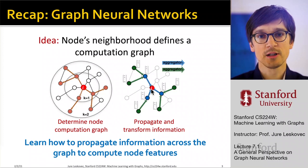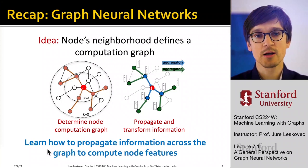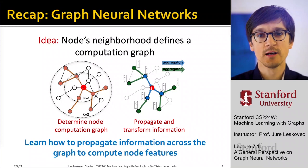And we talked about how graph neural networks allow us to learn how to propagate and transform information across the edges of the underlying network to make a prediction on embedding at a given node.